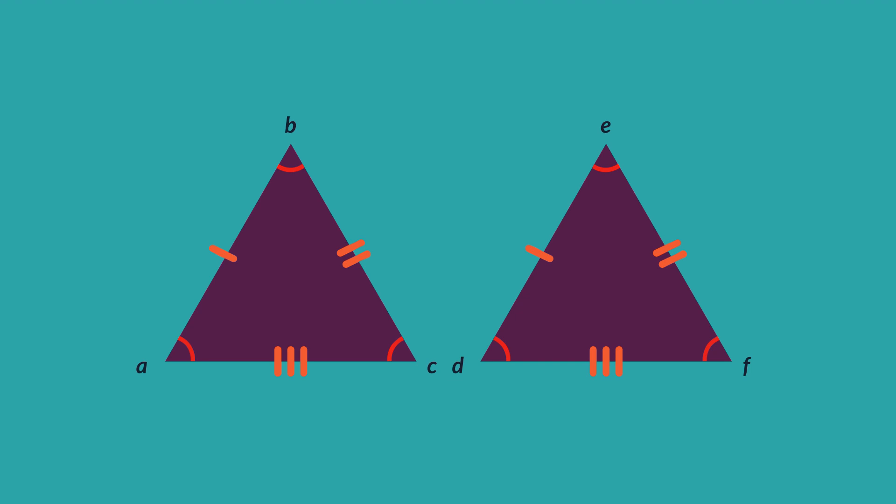These triangles are congruent because they have exactly the same three angles and exactly the same three sides.